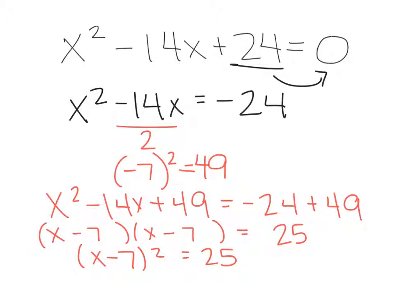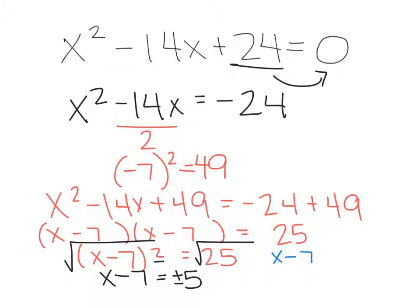To get rid of the square, we can square root both sides. So that leaves us with x minus 7 on this side, and the square root of 25 is 5, plus or minus 5. To finish solving the equation, you'd have to do x minus 7 equals negative 5, and x minus 7 equals positive 5. When you solve for x, you'd find that x equals 2 and x equals 12.